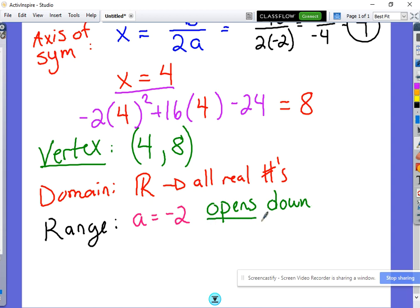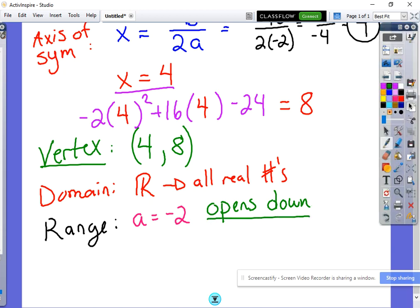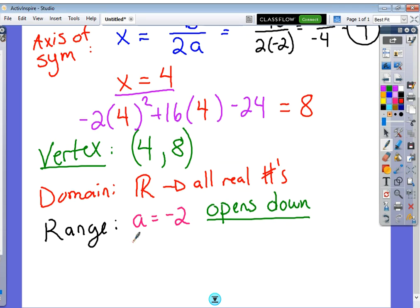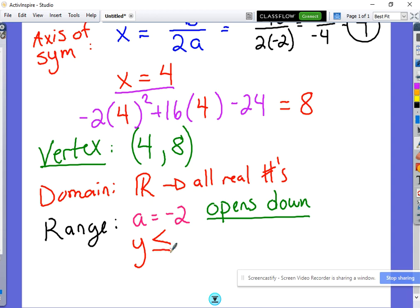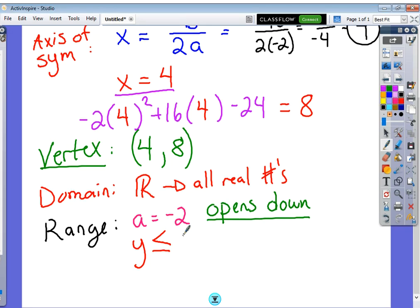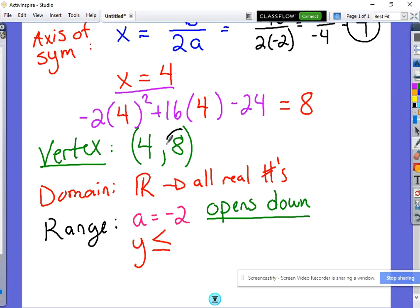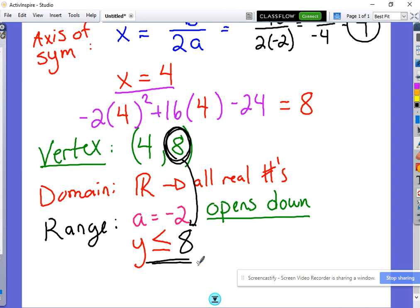So because it opens downward, our range in this case is now going to be y is less than or equal to. Since we're opening downward, it has to be less. Less than or equal to whatever this number was right here. So you take the y value of your vertex. So our range, in this case is y is less than or equal to 8.